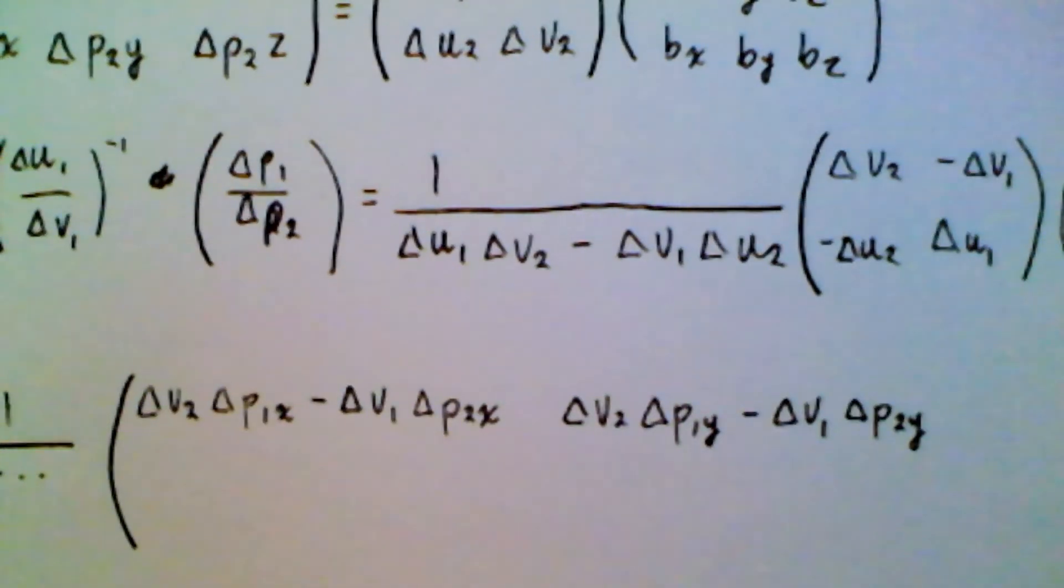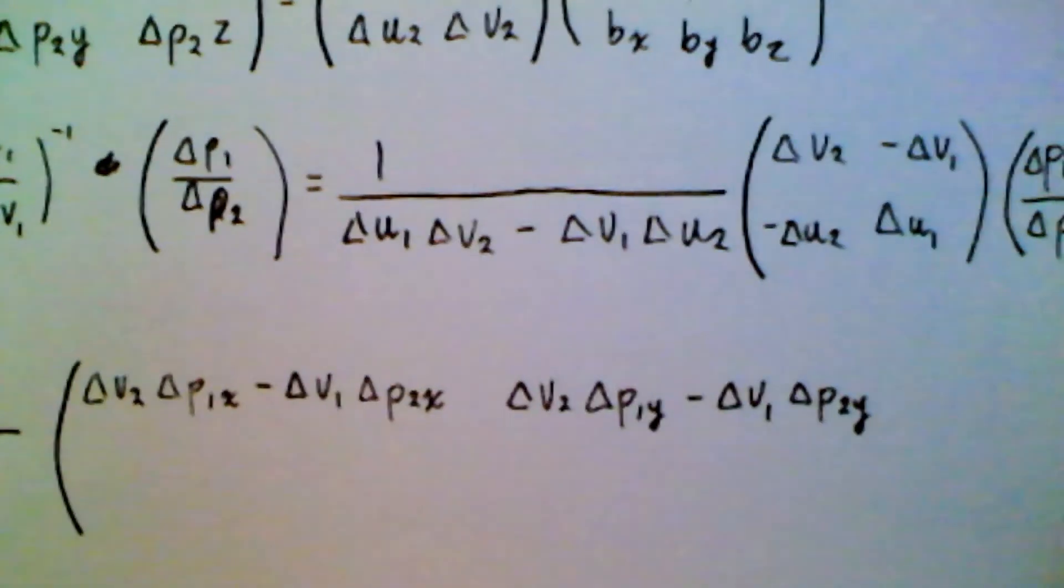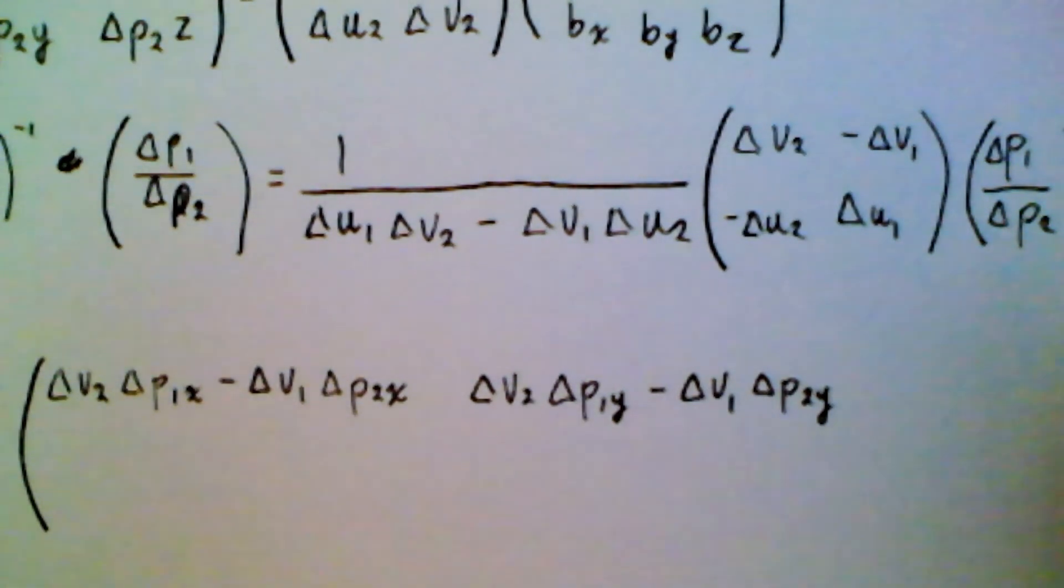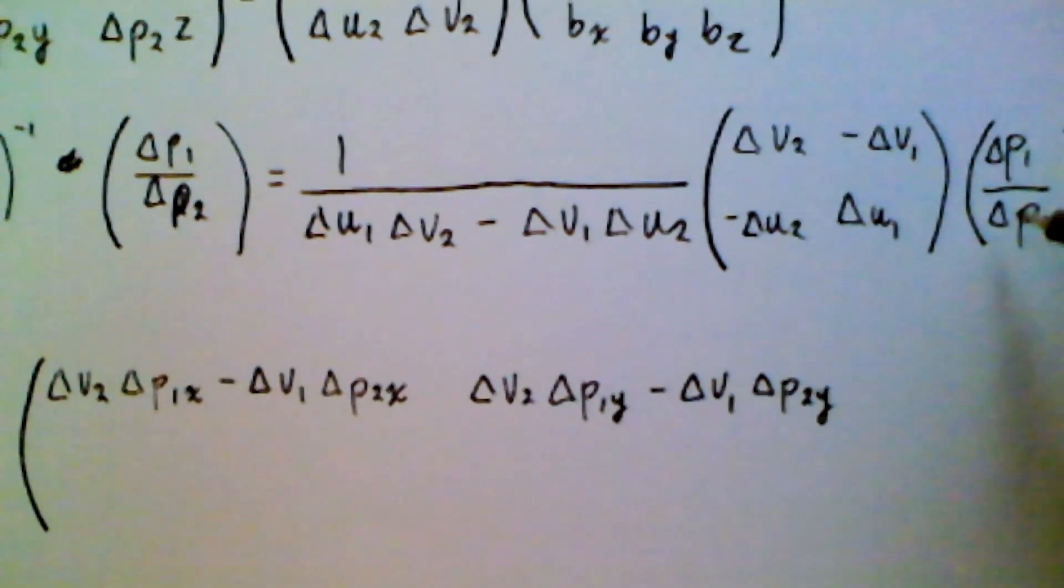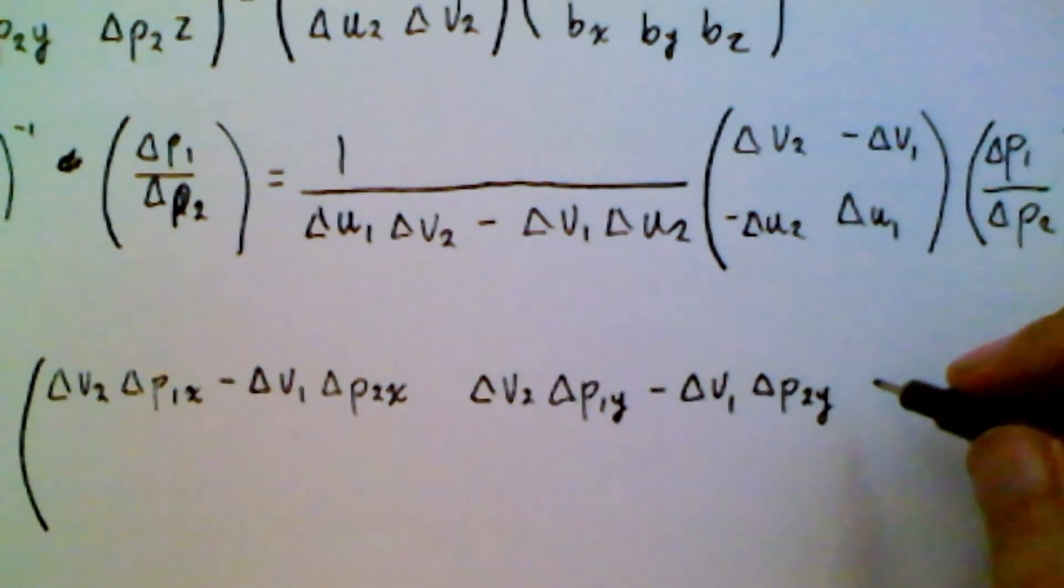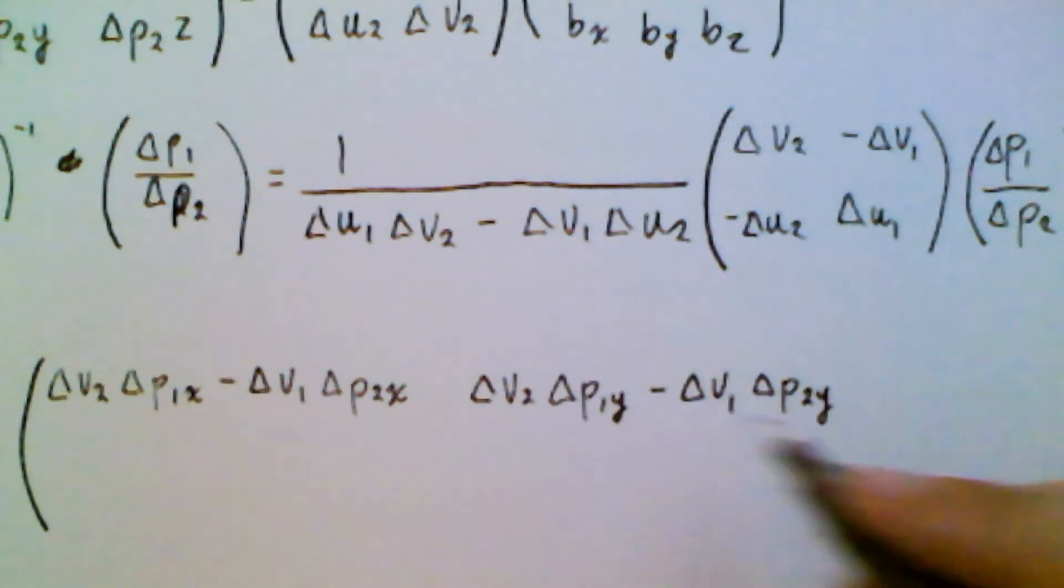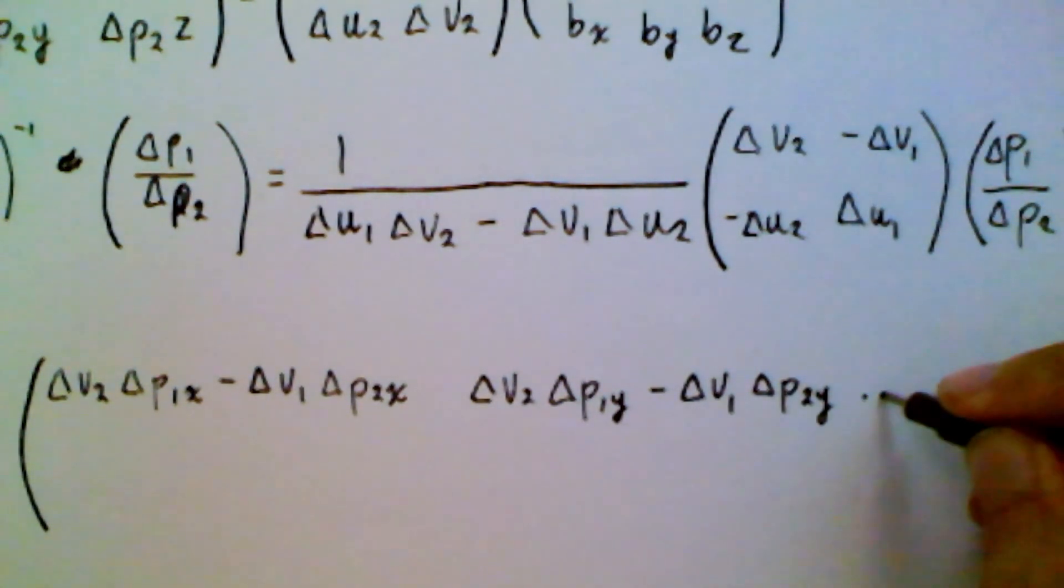So again, we're just multiplying these with the y component. It's hard to see, so I zoomed out, but the y component of these, and then you can see how this goes. It's exactly the same rule, just swapping out the y's for z's. So that would continue there.